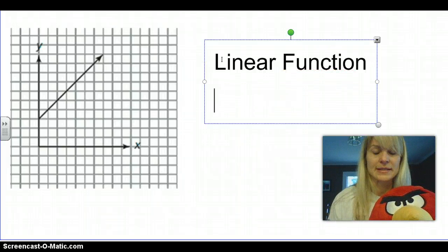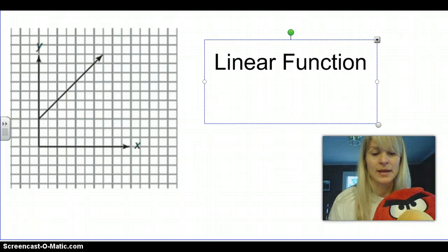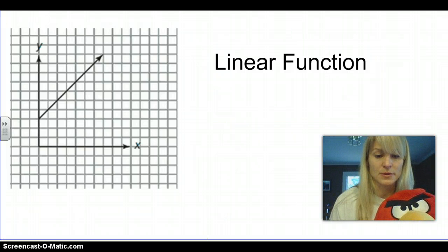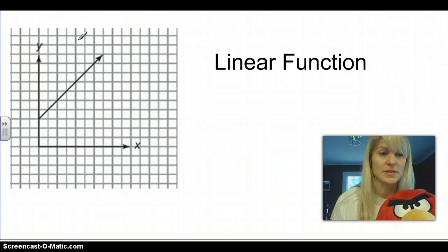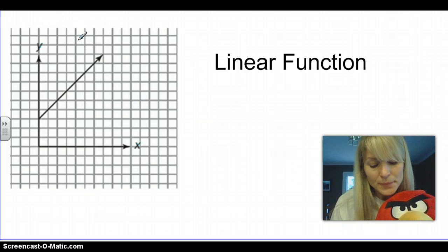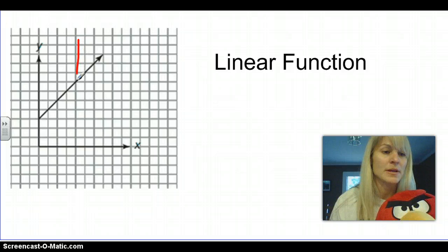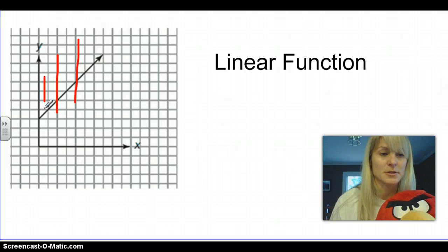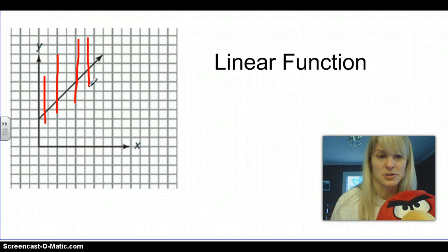We learned in class today that a function is anything that passes the vertical line test. What that means is, if you could draw a vertical line from top to bottom, and in multiple places on the graph, if it only crosses through at one time, that means it's a function. So as we do this multiple times, that's a function.